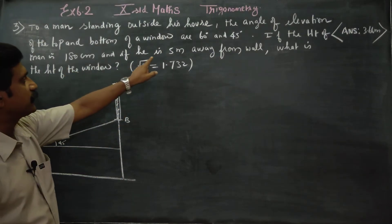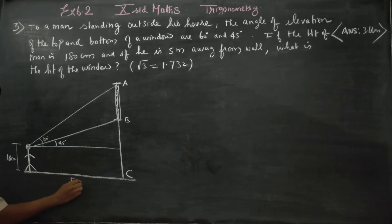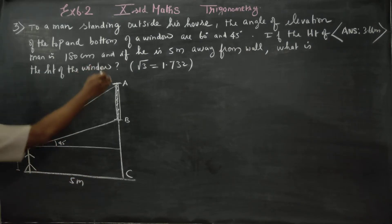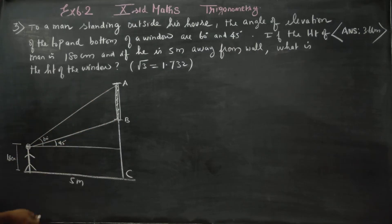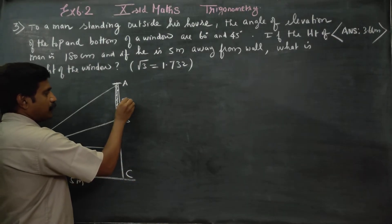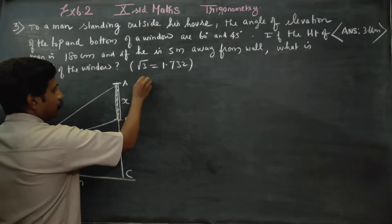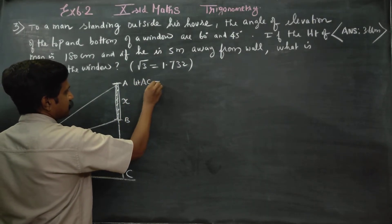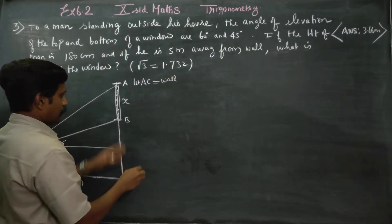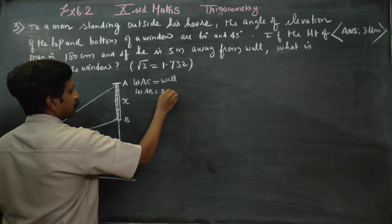If the height of the man is 180 centimeters and he is 5 meters away from the wall — AC is the wall, AB is the window, and DE is the man. Let AB equal X meters, which is the window. We start the sum. This is the height of the window and this is the height of the wall.